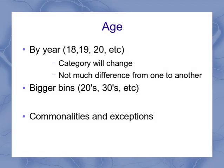Age is another thing we often use for students. We could classify them based on year — 18, 19, 20, etc. The difficulty with that is that the category keeps changing. You're 18 one year, but you're 19 the next, and it doesn't change for everybody at the same time — it changes on their birthday. Also, there's not a lot of difference between a student who's 18 about to turn 19 and a student who's just turned 19.